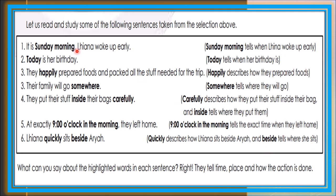What can you say about these highlighted words? They tell time, places, and how the action is done. These are examples of adverbs of time, adverb of place, and adverb of manner. Sunday morning and today are adverbs of time. Happily is adverb of manner. Somewhere and inside are adverbs of place. Carefully is adverb of manner. Nine o'clock in the morning is adverb of time. Quickly is adverb of manner, and beside is adverb of place.